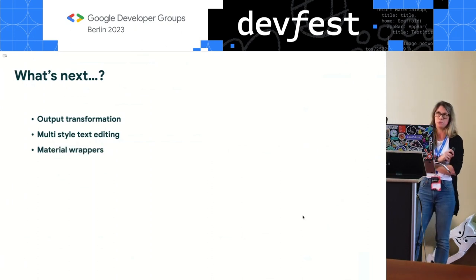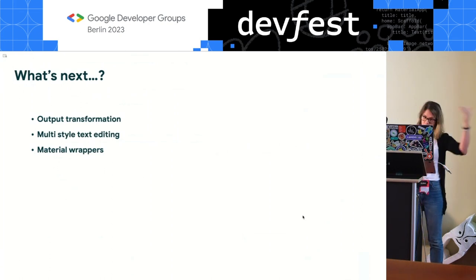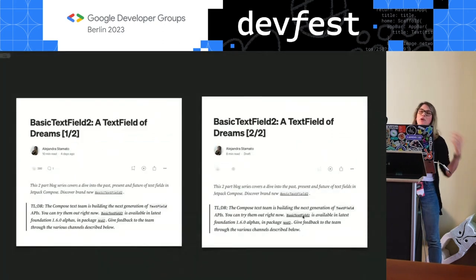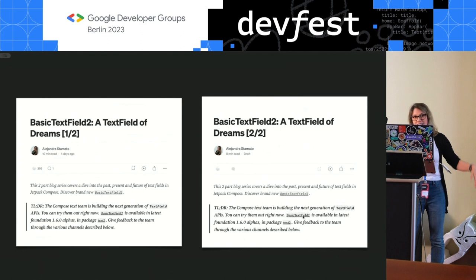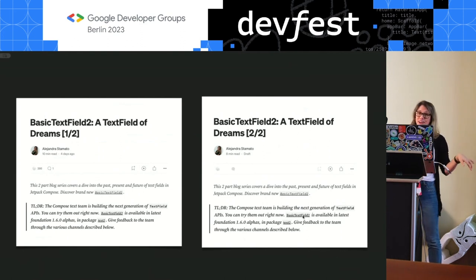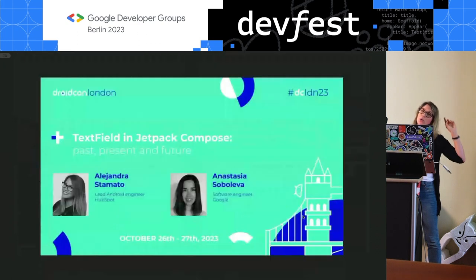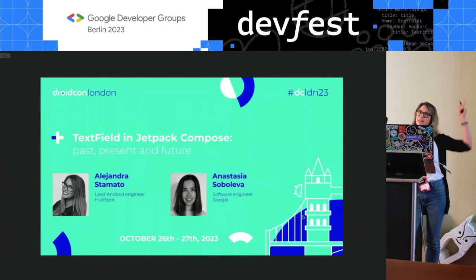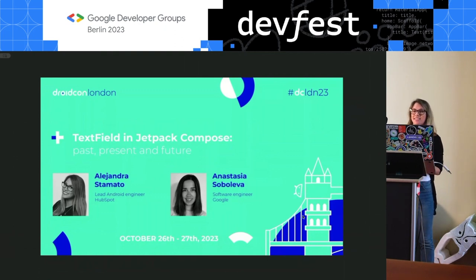What's next: output transformation will be stabilized, multi-style text editing — a very requested feature from basic text field 1 — is coming next, and material wrappers so you don't have to style everything yourself, like an outline text field 2. If you want to know more, there's a blog post — a less fast version of everything covered today — in a two-part blog series. You can also watch a longer version of this talk from JoyCon London with my colleague.